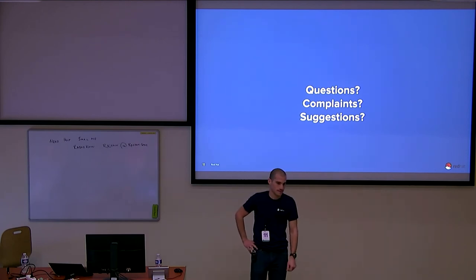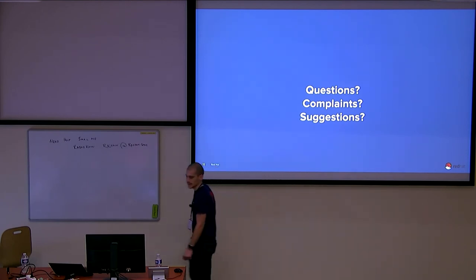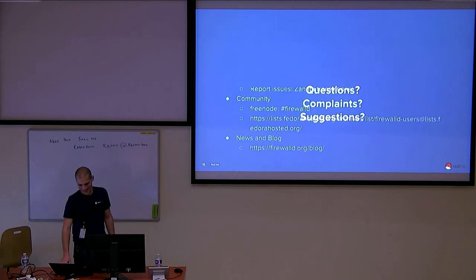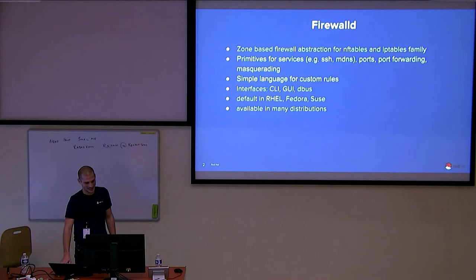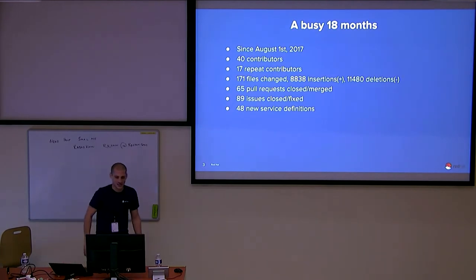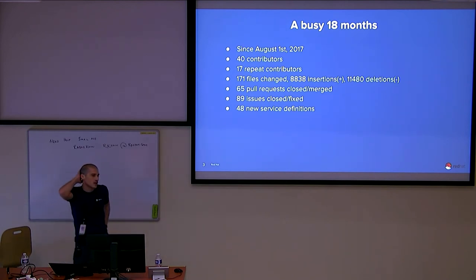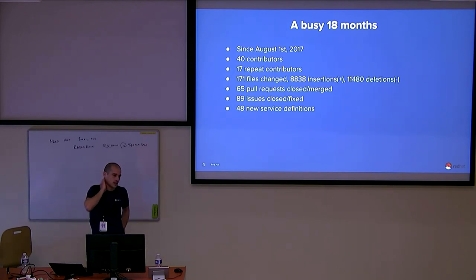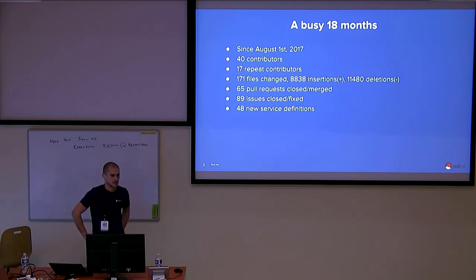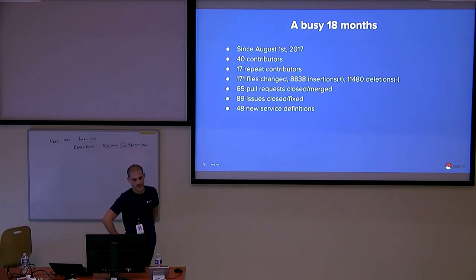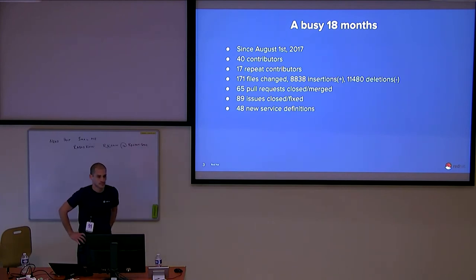A question about the diff stats from one of the first slides — roughly 8,000 lines added and 11,000 removed over 18 months, yet cool new features were added. What got removed? A lot of that had to do with code refactoring — quite a bit of redundant code was removed. We also removed an alternative CLI that was basically unknown and not used much; removing that CLI alone accounted for probably 6,000 of those lines. So the result is less maintenance overhead.